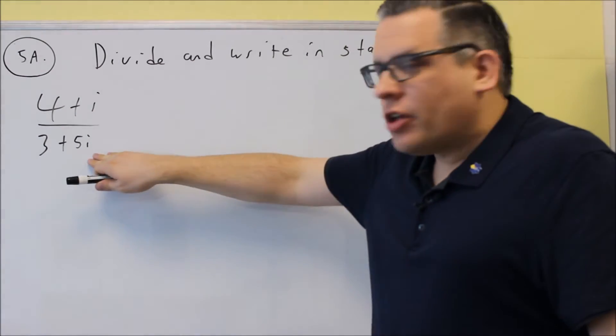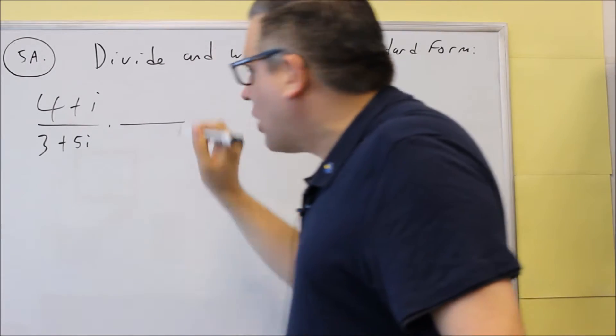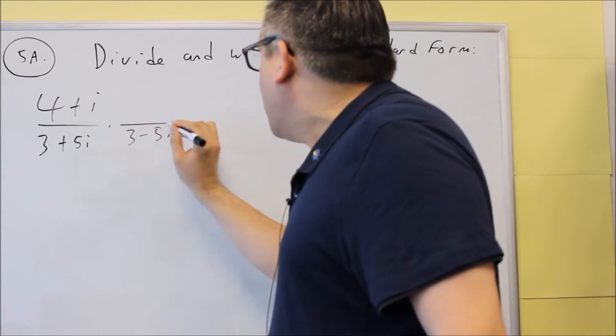We need to get rid of the i that's on the bottom of the fraction. To do that, for these kind of problems, you're always going to multiply the top and bottom by the conjugate of the bottom one.